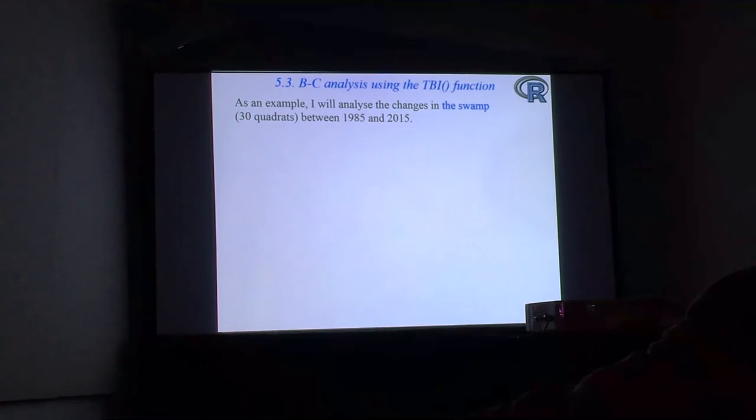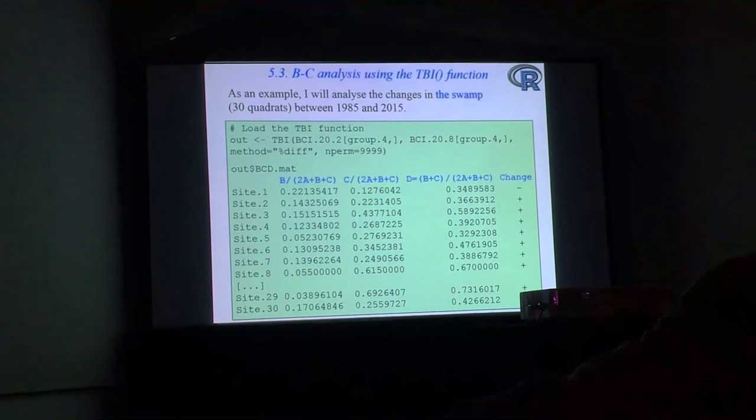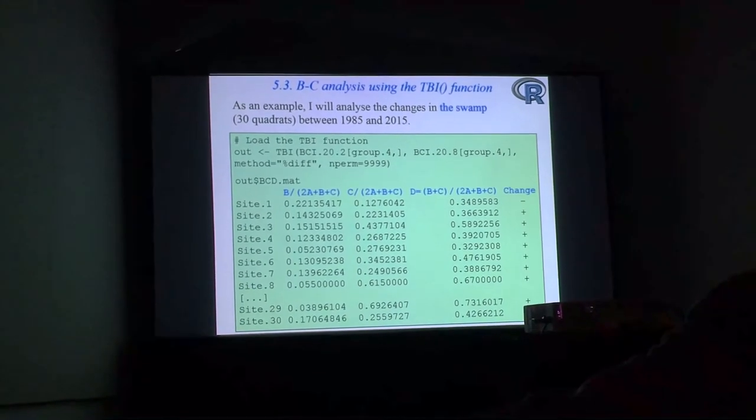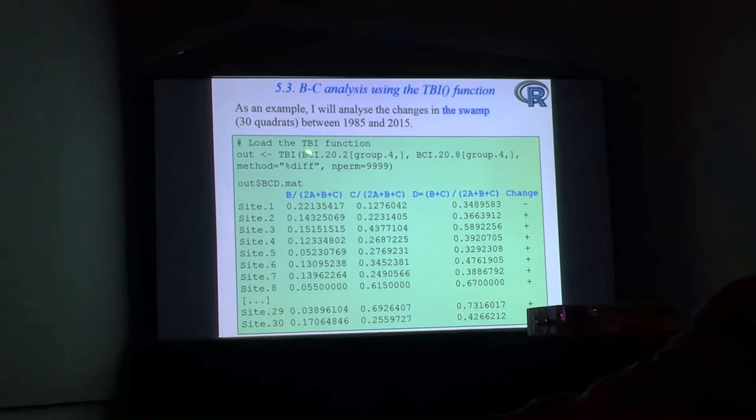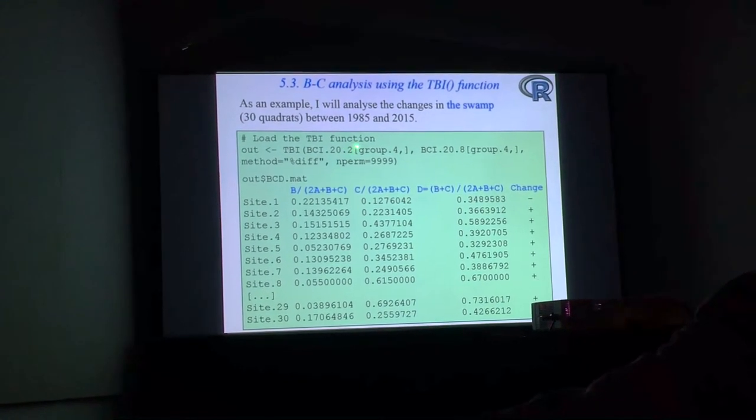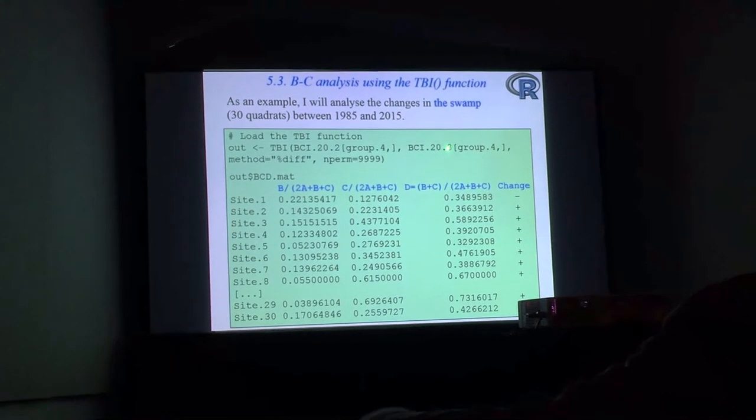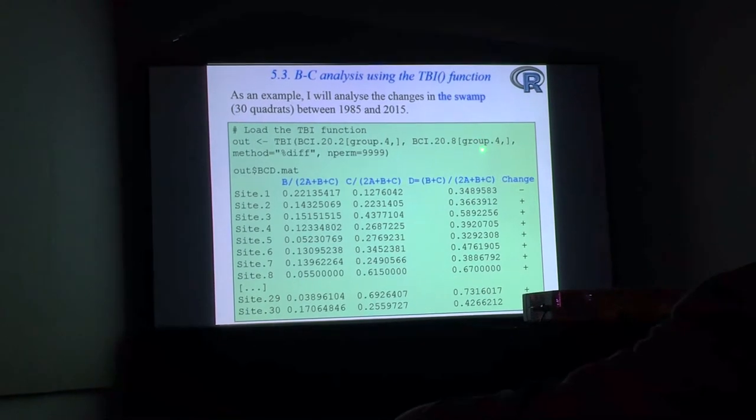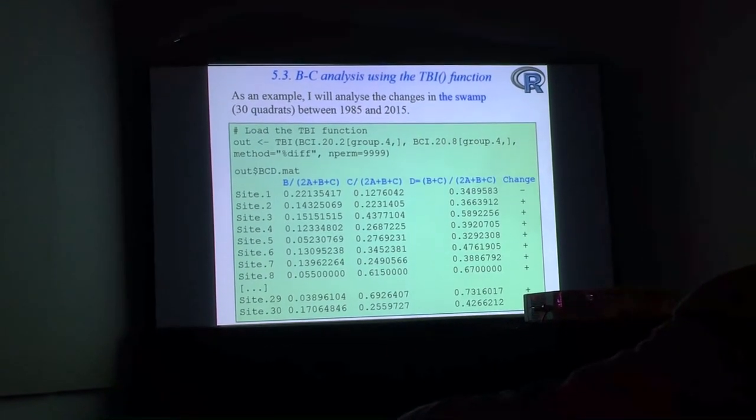As an example, I will analyze in detail the changes in the swamp. The R function that does the calculation I call TBI. I input the community composition data for the second survey in 1985 and the community composition data for the eighth survey, 2015. I will do the analysis for the 30 sites that are members of group four in the swamp.